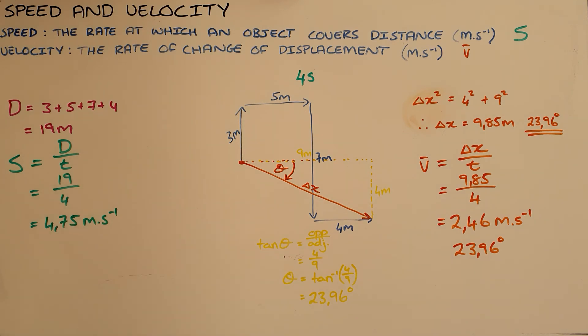It is important to understand the difference between speed and velocity: that one is a vector quantity and the other is a scalar quantity. Velocity is far more commonly used and it's important to remember that velocities must always be given with a direction.